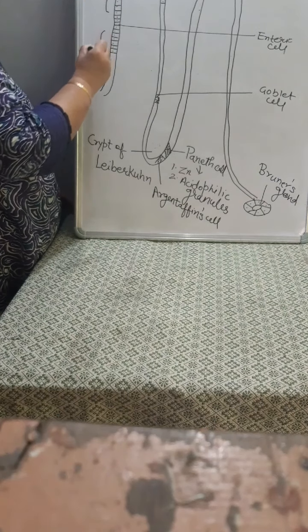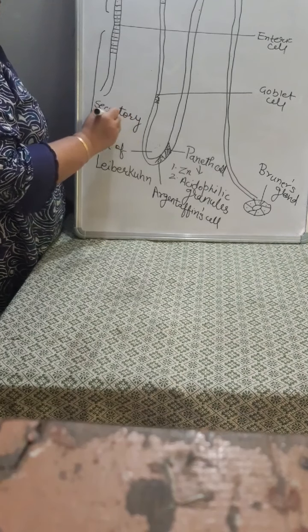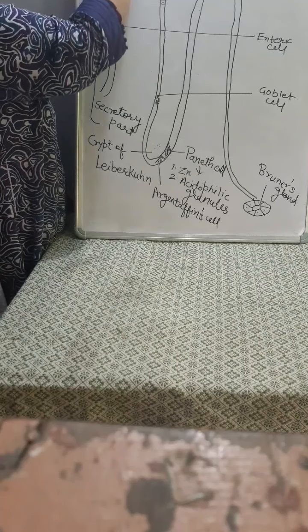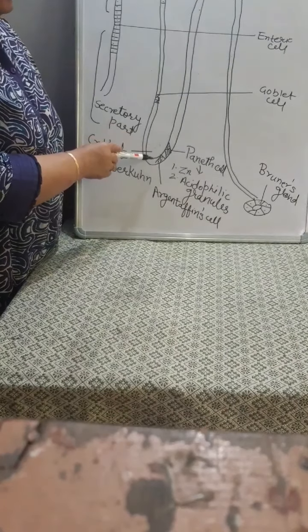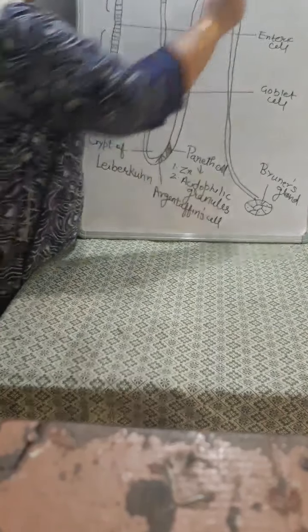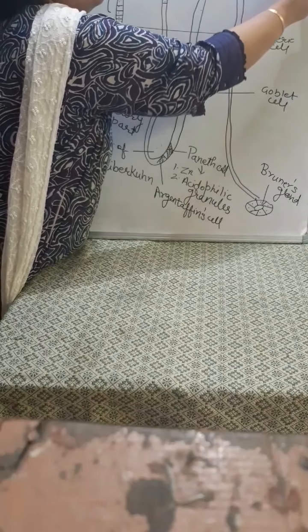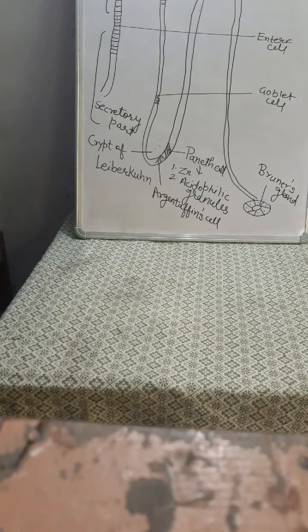If we talk about the villi, there are two parts. The lower most part is called the secretory part, and the uppermost part is called the absorptive part. If we talk about the secretion of intestinal glands, we use the term succus entericus. Succus entericus is the collective secretion of the intestinal gland. It contains various juices which help in the complete digestion of maltose, starch, nucleic acids, proteins, and so on. That is all about the intestinal gland — draw this diagram carefully.